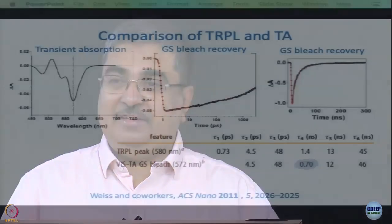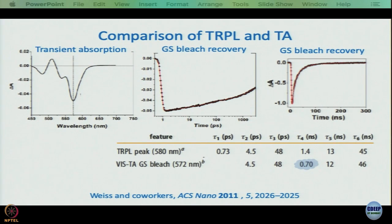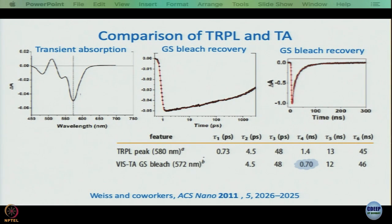Otherwise, you cannot say that 4.5 picoseconds is a particular decay mechanism. You get 4.5 from all wavelengths — it shows up in TRPL, in transient absorption visible, and in NIR as well. This is a comparison between time-resolved photoluminescence and transient absorption fitted independently, and they get a very good match. 6 time constants came from these experiments: 3 from one, 3 from another.